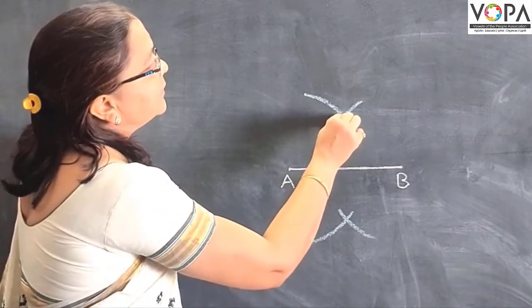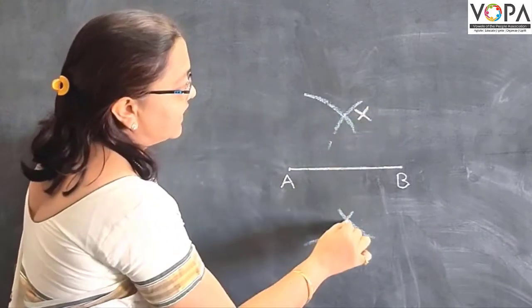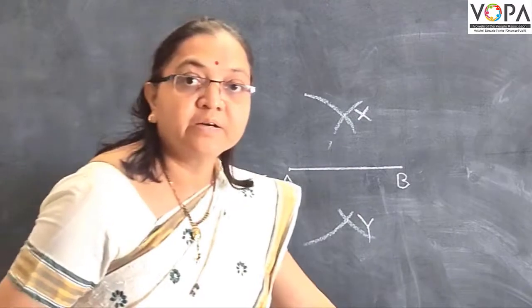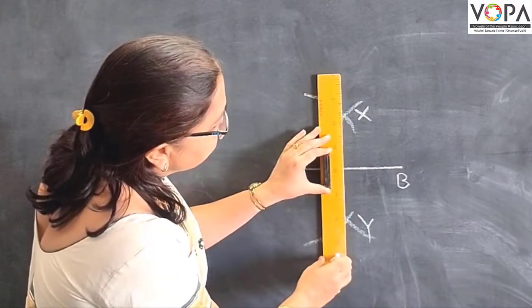These are the points of intersection of these two arcs. Suppose this is point X and this one is point Y. Then join these points X and Y.